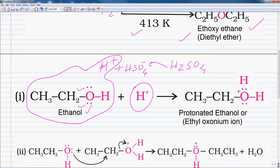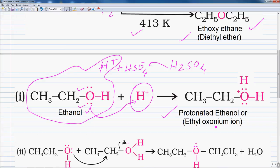The alcohol is converted into protonated ethanol, also called the ethyl oxonium ion. Since this proton does not have any electron, these two electrons are transferred to the proton, and H+ is added to the oxygen. So there is a formation of protonated ethanol.